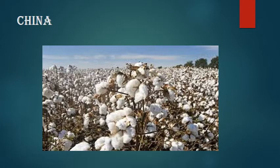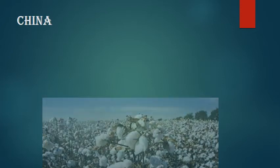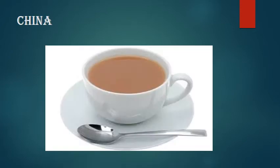One more thing about China: it is also the largest producer of tea in the world. So three things about China — first, it is the largest producer of gold; second, the largest producer of cotton; and third, the largest producer of tea in the world.